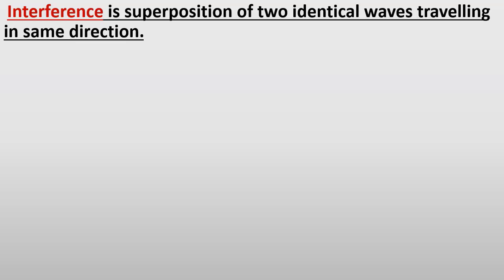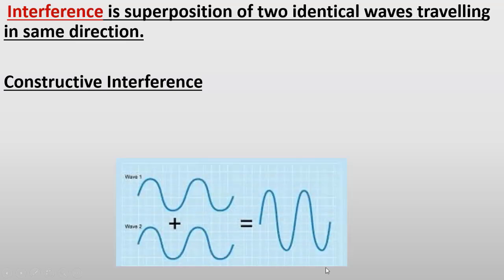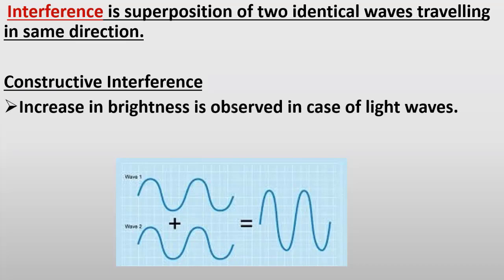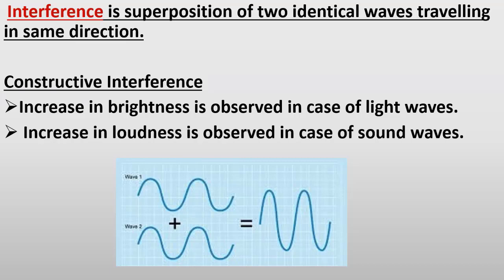Interference do tarah se ho sakti hai: constructive interference aur destructive interference. Constructive interference mein do waves same direction mein travel karti hain aur jab superpose karein is tarah ke crust crust par aur trough trough par fall kare, to resultant wave ka amplitude large hoga — amplitude increase hoga. Agar sound waves constructively interfere karein to loudness increase hoti hai, aur agar light waves constructively interfere karein to brightness increase hoti hai.